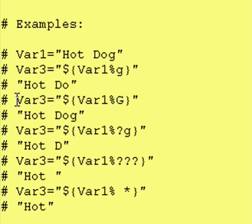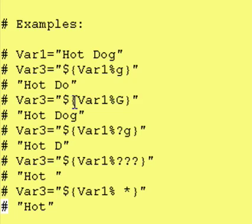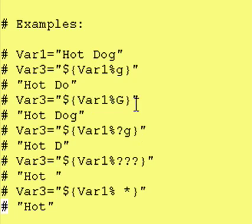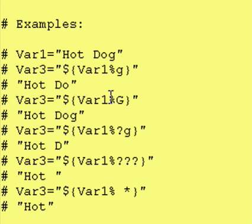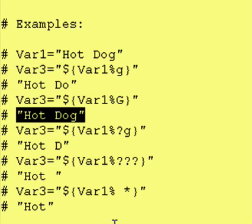Next, we try to put into var3 dollar sign curly brace var1, percent sign uppercase G. So we take the contents of var1, put them right there, and then this says try to remove from the right-hand side an uppercase G. Well, our contents of var1 does not end with an uppercase G. Therefore, we have nothing that we can remove, and var3 ends up with hot dog.